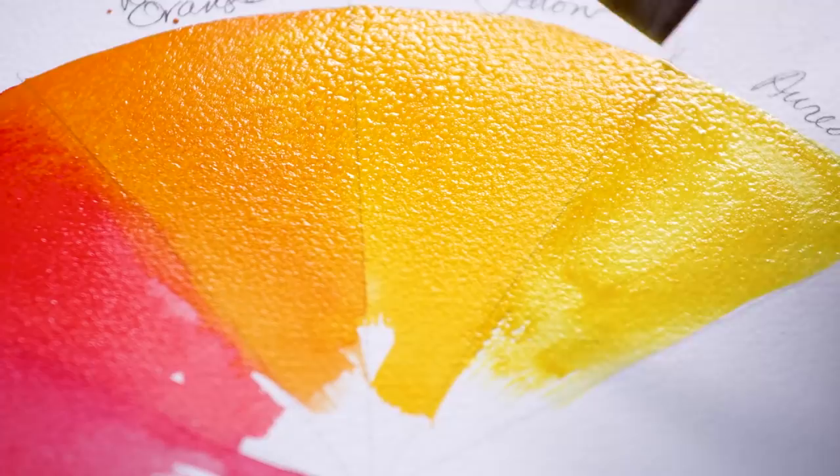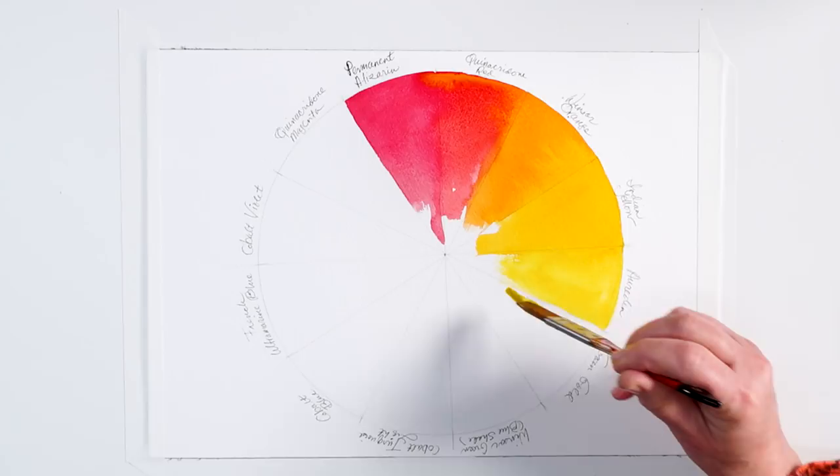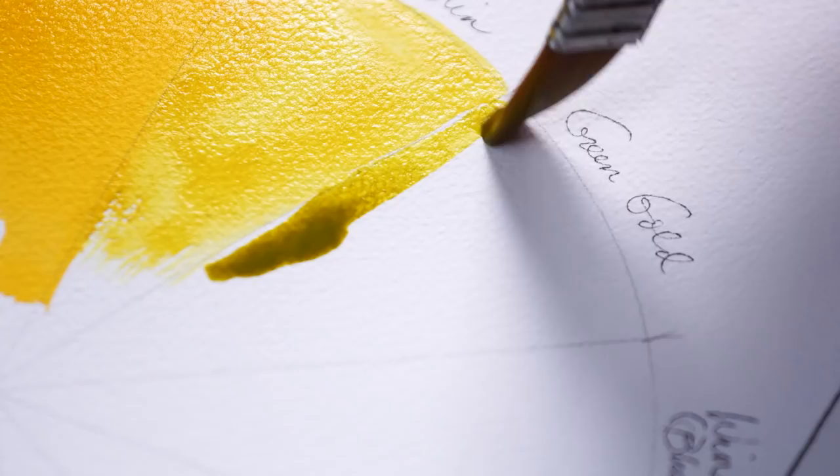Now we're going to go from our primary yellow, Aureolin, and move around the circle towards our primary blue. From Aureolin, I'm going to start adding blue to my yellow and get this beautiful green called green gold.